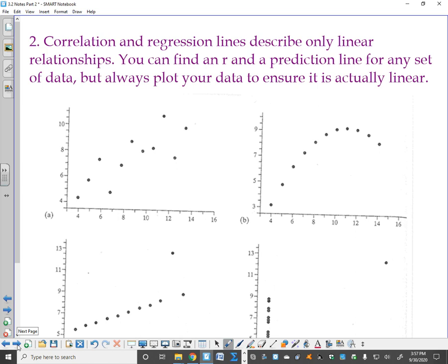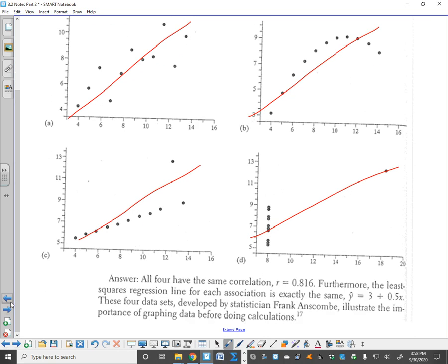Correlation and regression lines describe only linear relationships. You can find an r and a prediction line for any set of data. But that doesn't mean that a linear relationship is a good fit. Like, I can draw a line through all this data. Now, check this out because this is really interesting.